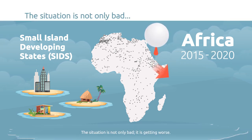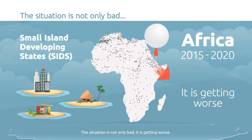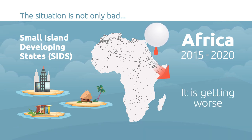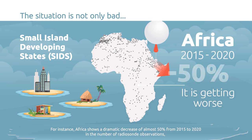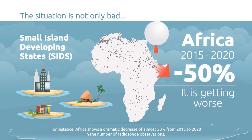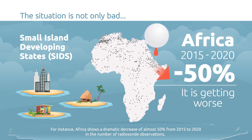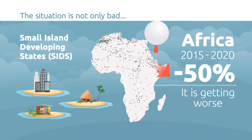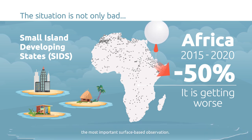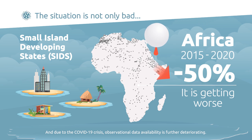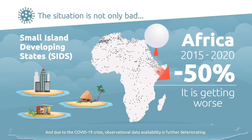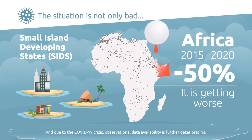The situation is not only bad, it is getting worse. For instance, Africa shows a dramatic decrease of almost 50% from 2015 to 2020 in the number of radiosonde observations, the most important surface-based observation. And due to the COVID-19 crisis, observational data availability is further deteriorating.